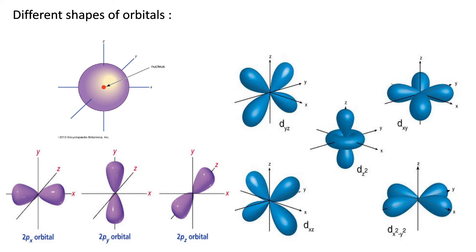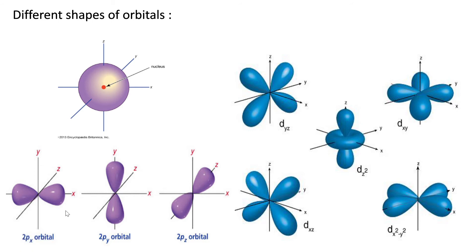Now coming to the different shapes of the orbitals. When l=0, it is an S orbital, which is spherical along the x, y, and z axes. When l=1, we have the P orbital, which can have different orientations: along the x-axis it is called px, along the y-axis it is py, and along the z-axis it is pz. Since these belong to the second shell, they are designated 2px, 2py, and 2pz.